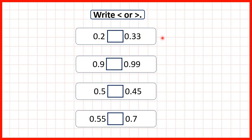The way to compare decimals is to write out both numbers with the decimal points lined up and then to write 0 in empty squares. We can do that because 0.20 is the same as 0.2 — all this 0 tells us is that we don't have any hundredths. So now it's easier to compare.